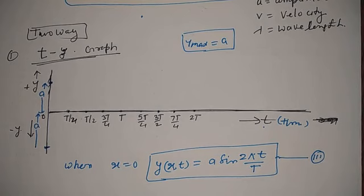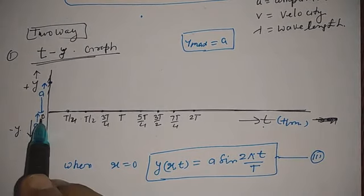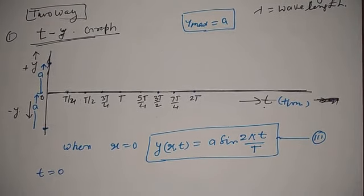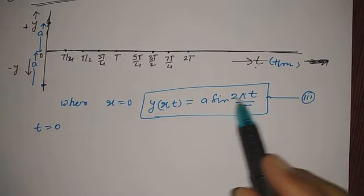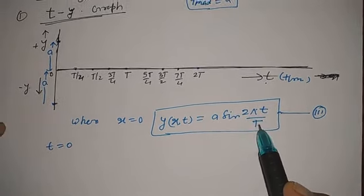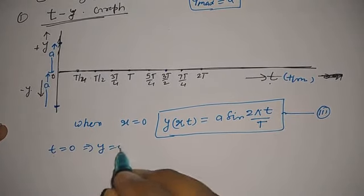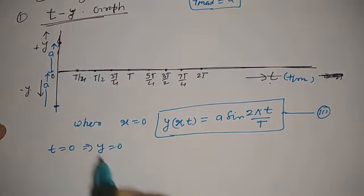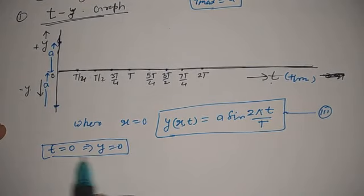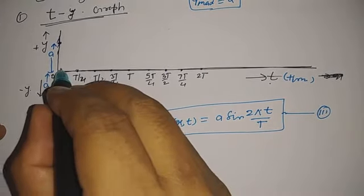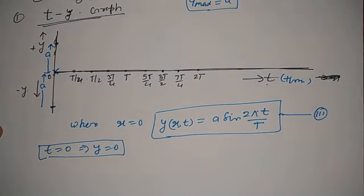Now see how coordinates change as we vary the value of time. Let t = 0: sin(2πt/T) = sin(0) = 0, which implies y = 0. So the first coordinate is (t = 0, y = 0).